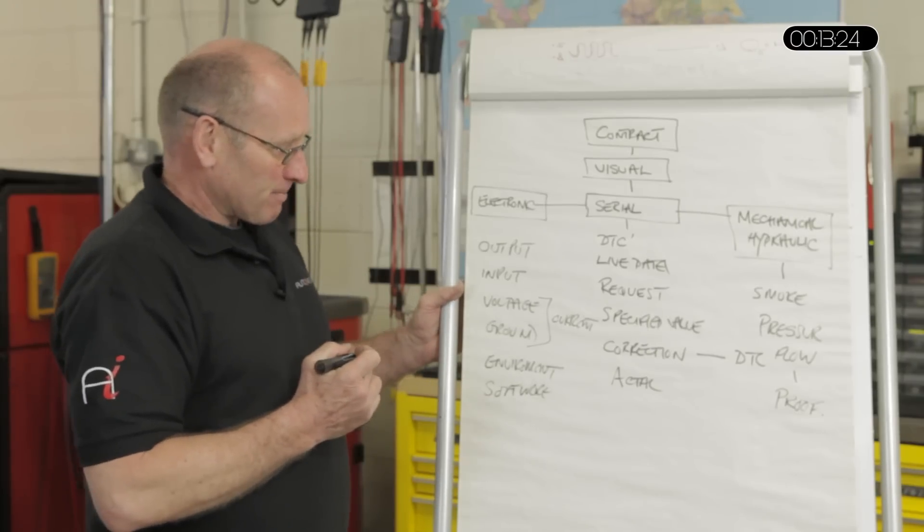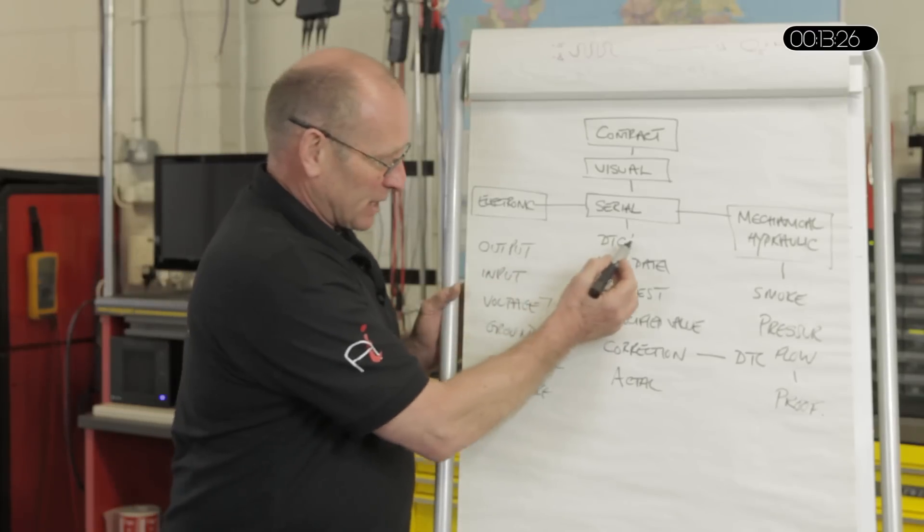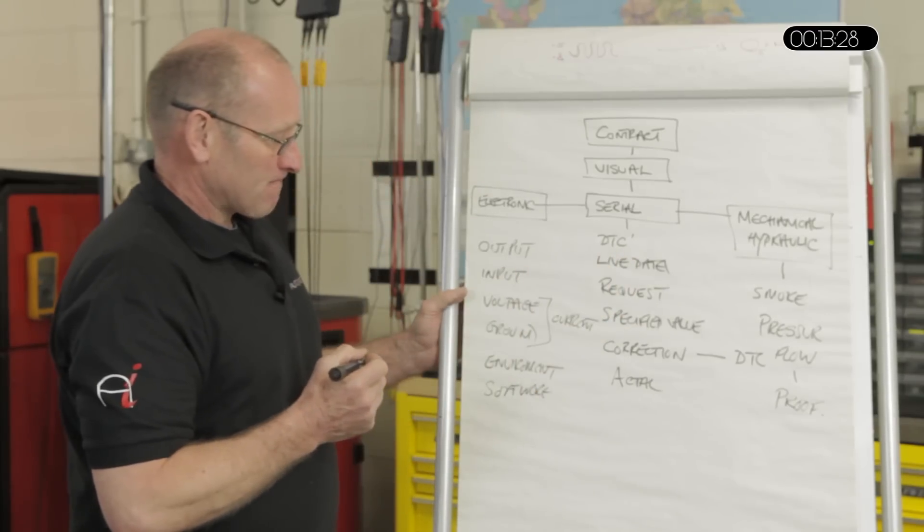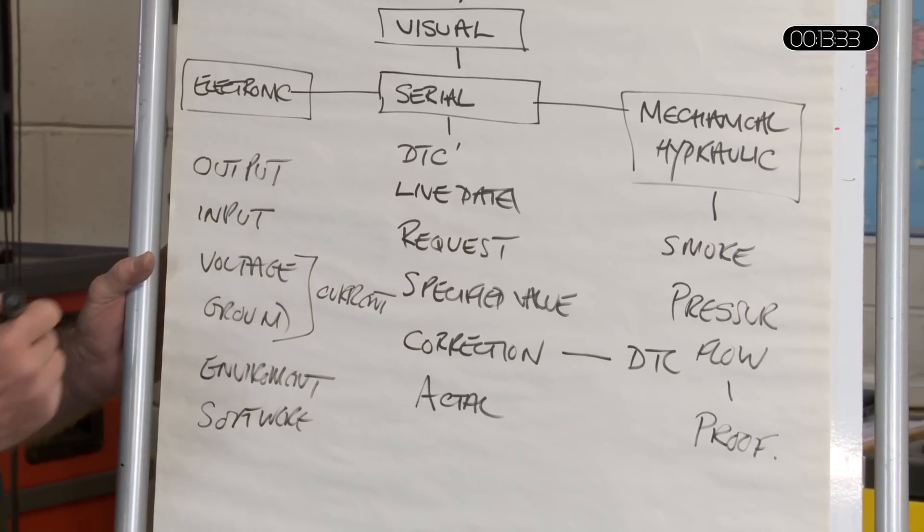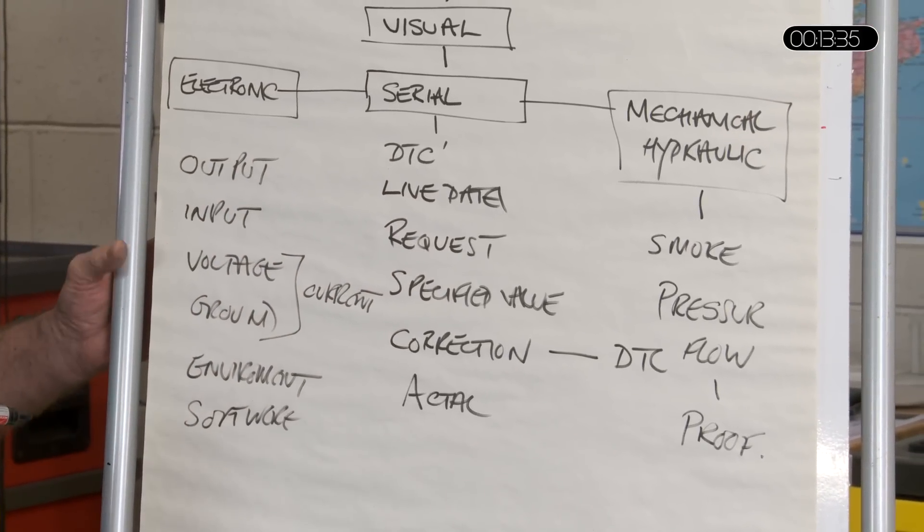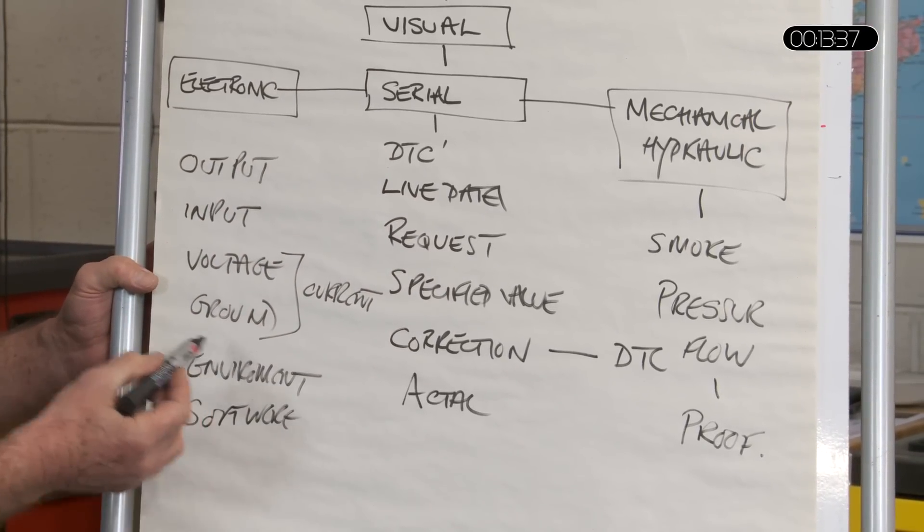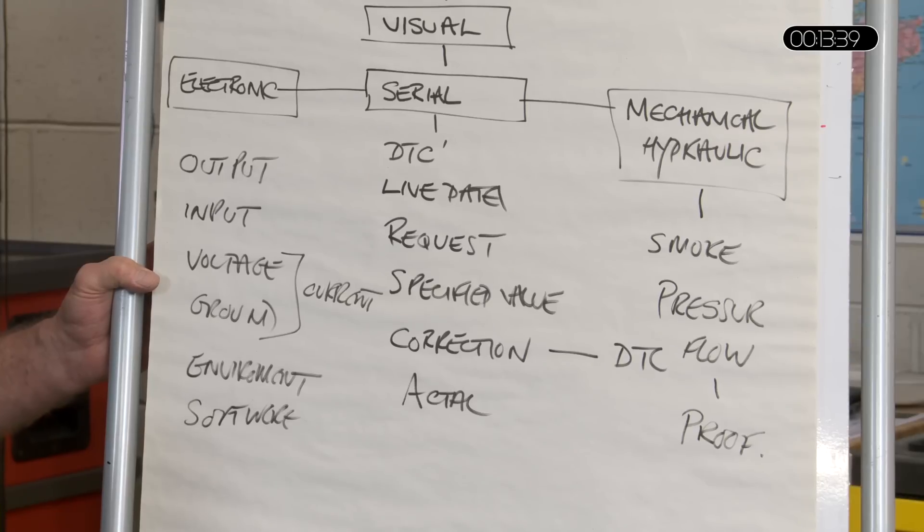The logic here is that if we have a problem, let's say we have a DTC, why has that occurred? Is it an electronic problem? Is the range of the sensor wrong? Is the environment it measures wrong? In other words, it's actually telling us that there is actually a fault within that environment.